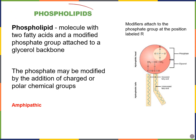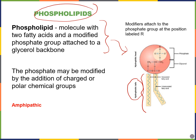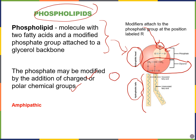Our next type of lipid are phospholipids, which are critical to our cell membranes. Phospholipids are composed of two fatty acid tails — the water-fearing portion — attached to a glycerol backbone, which itself is attached to a phosphate group. The phosphate group is often modified with a charged or polar, water-loving molecule. So the general structure is a polar, hydrophilic head attached to two hydrophobic tails. Because this molecule has both a hydrophilic and a hydrophobic portion, we call it an amphipathic molecule.